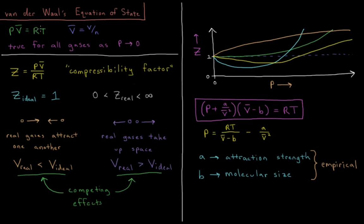P being the pressure, R being the gas constant, and T being the temperature. The ideal gas law is true for all gases as the pressure goes to zero, or similarly as the molar volume goes to infinity, and all particles are non-interacting.